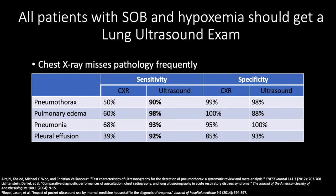I really encourage you to scan all patients with shortness of breath and hypoxia — they should get a lung ultrasound exam. If you compare chest x-ray, which we commonly get in most patients who come to the hospital with shortness of breath, lung ultrasound outperforms chest x-ray for pneumothorax, pulmonary edema, pneumonia, and pleural effusion. The sensitivity for ultrasound is so superior: we're missing pneumothorax half the time and pulmonary edema 40% of the time with x-ray, but the sensitivity for ultrasound is in the 90s with similar specificity.